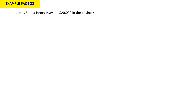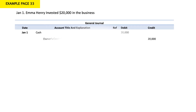Why? Because cash is an asset, it increases in debit. And owner's capital is owner's equity, so it increases in credit. My journal entry will be: debit cash $20,000, and credit owner's capital $20,000.